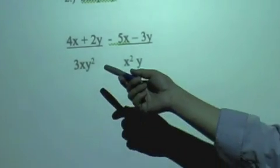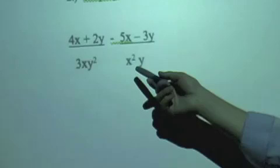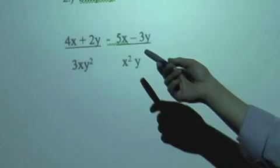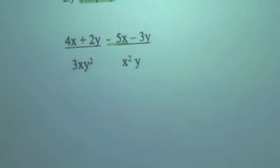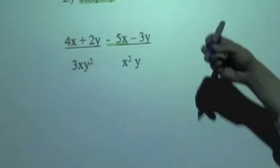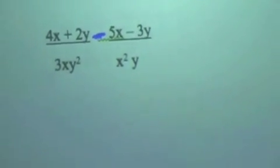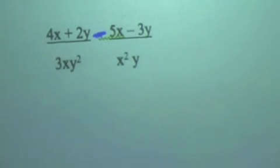Alright, number two. This one up here is a simple simplification problem, but what kind of operation symbol do we have in between? What do we have, Jason? Yeah, we got subtraction right there. Now what do you notice about the denominators? They are not the same.